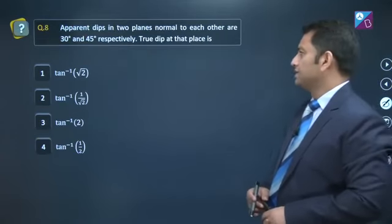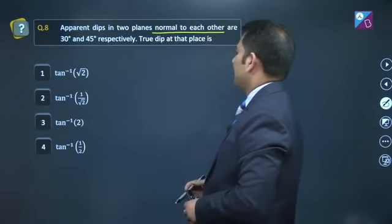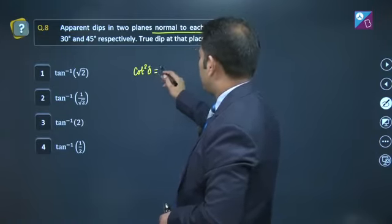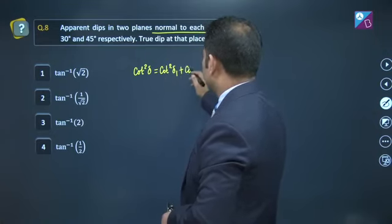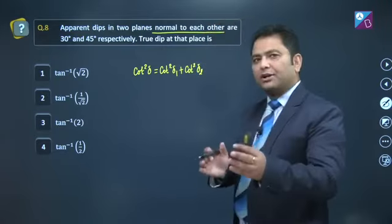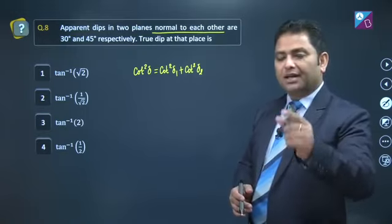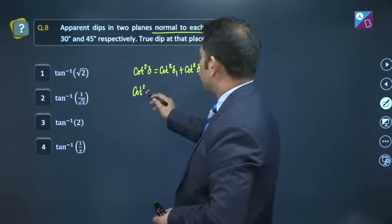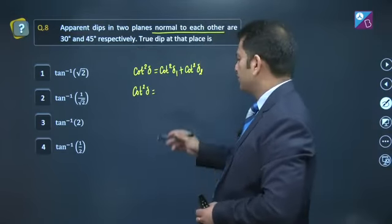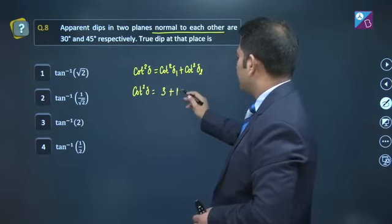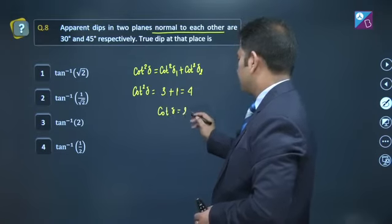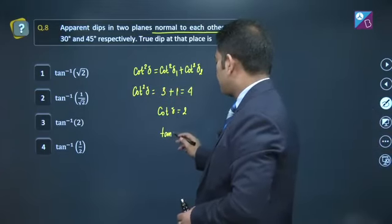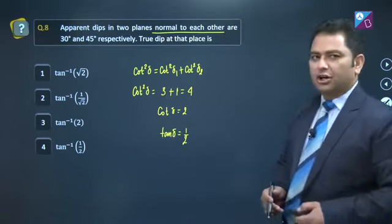Question number 8. Apparent depths in two planes normal to each other are 30 degree and 45 degree. True depth at that place. You should remember the cotangent law: cot square delta is cot square delta 1 plus cot square delta 2. Here delta 1 and delta 2 are apparent depths in two normal planes, and delta is the true depth. Meaning this has become so simple. Cot square delta is - instead of delta 1, 30 - cot square 30 will be 3, and cot square 45 will be 1, so this becomes 4. Meaning cot delta equals 2. Don't worry, the option is in terms of tan, we can easily customize it. Well, cot delta is 2, so tan delta is half. So delta is tan inverse half, option number 4.